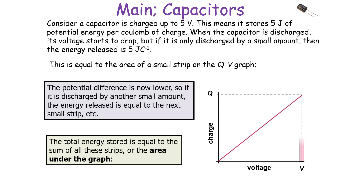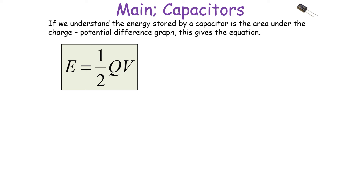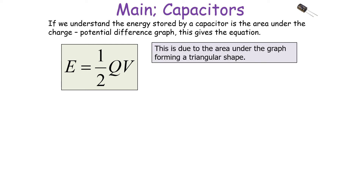If a capacitor is charged up to 5 volts, it stores 5 joules of potential energy per coulomb of charge. When it discharges, the voltage drops. If discharged by a small amount, the energy released equals the area of a small strip on a QV graph — for example, 4 joules per coulomb. The potential difference is now lower, so each subsequent small discharge releases the energy of the next small strip. The total energy stored equals the sum of all these strips — the area under the graph — giving E equals one half QV.